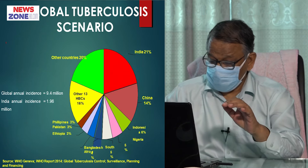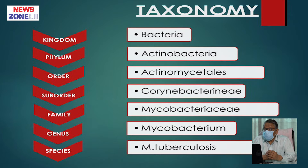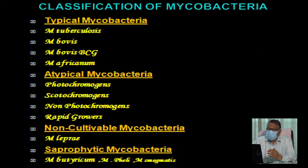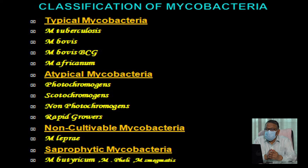Looking at the taxonomy, the family is Mycobacteriaceae, genus Mycobacterium, species tuberculosis. In classification, the typical Mycobacterium group is the Mycobacterium tuberculosis complex, which includes Mycobacterium tuberculosis, Mycobacterium bovis, Mycobacterium bovis BCG, Mycobacterium africanum, Mycobacterium microti, and Mycobacterium caprae.